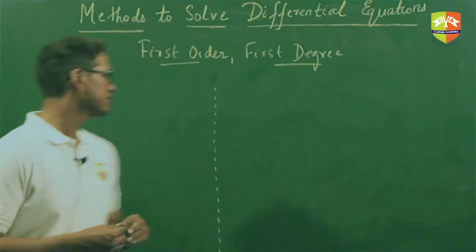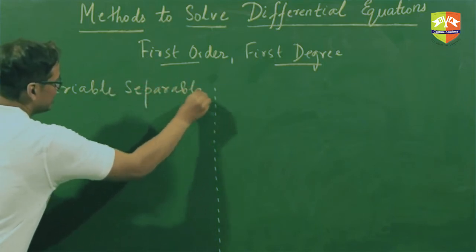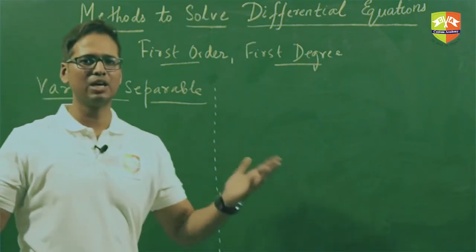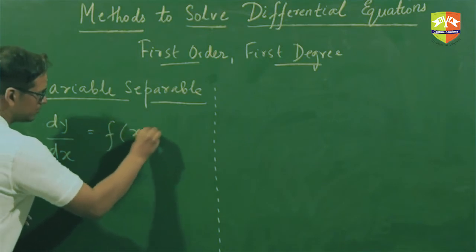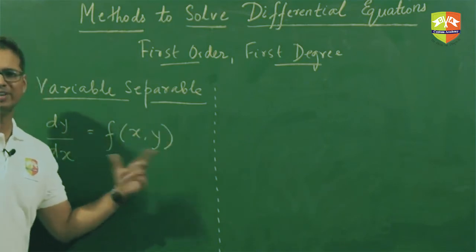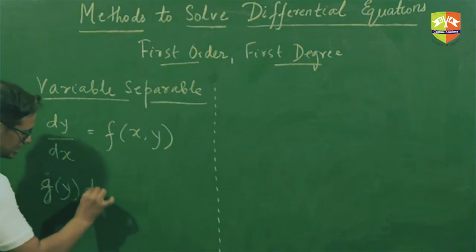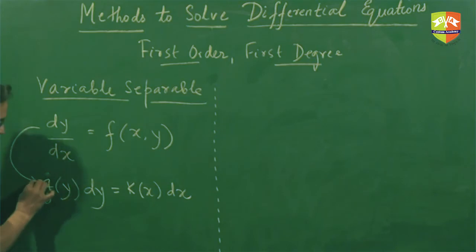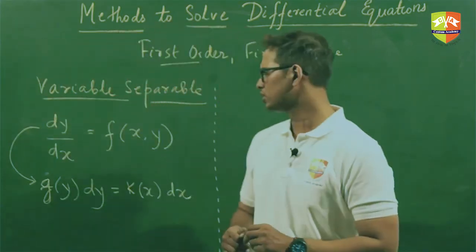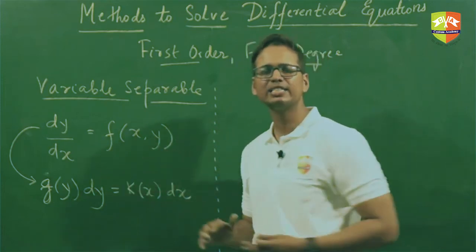The very first method I am going to talk about is the variable separable method. As the name itself suggests, here we should be separating out the variables. If we have a differential equation dy/dx as a function of x and y, we can write it as g(y) dy = k(x) dx, separating functions of y with dy and functions of x with dx.